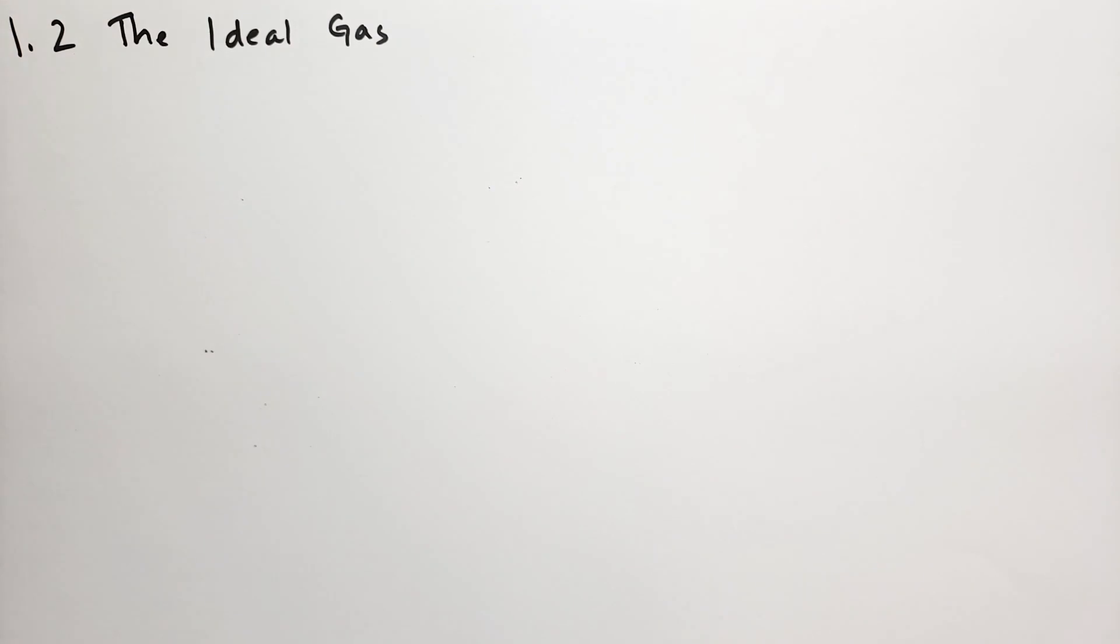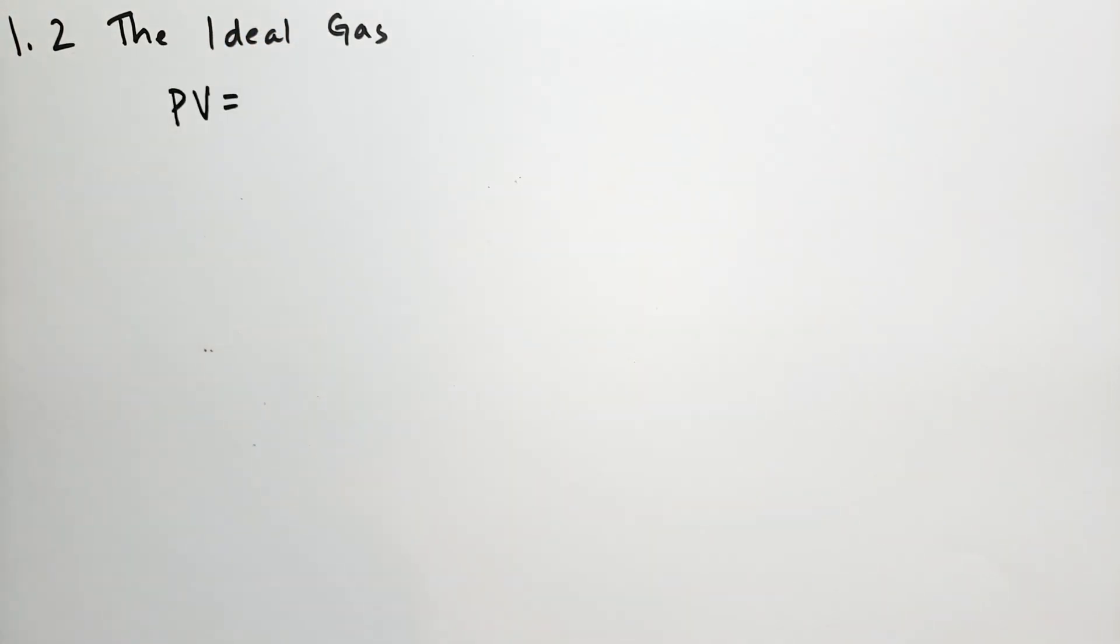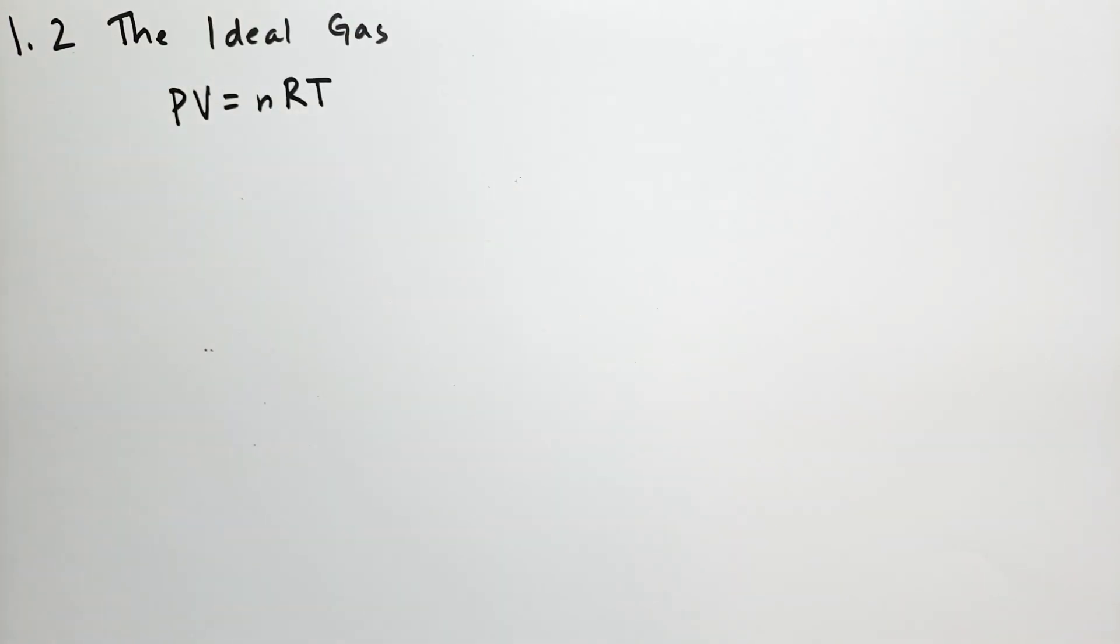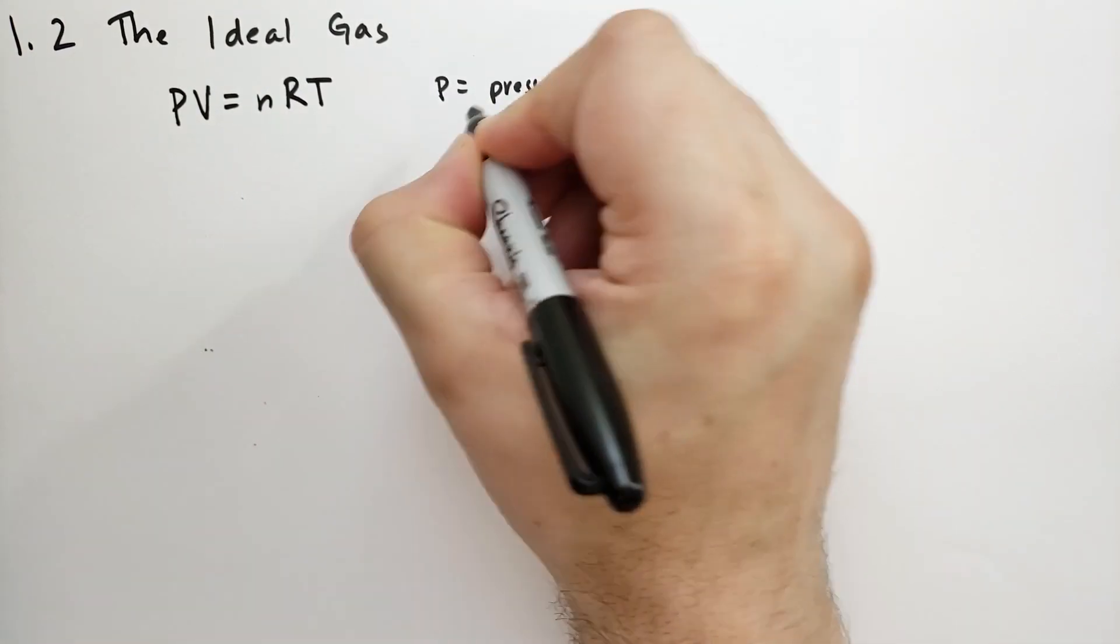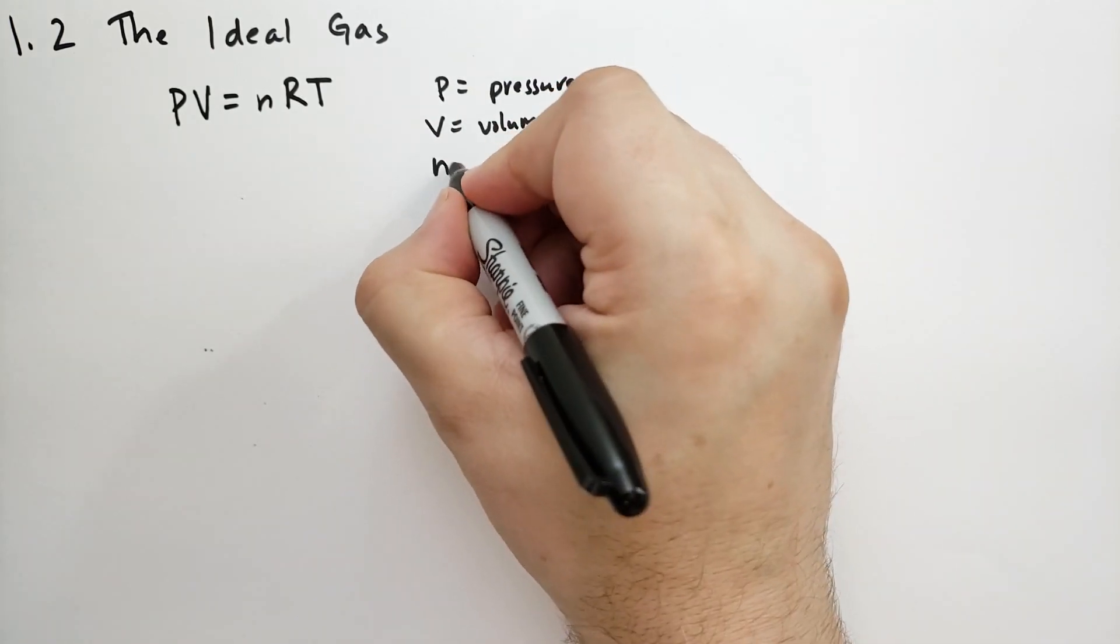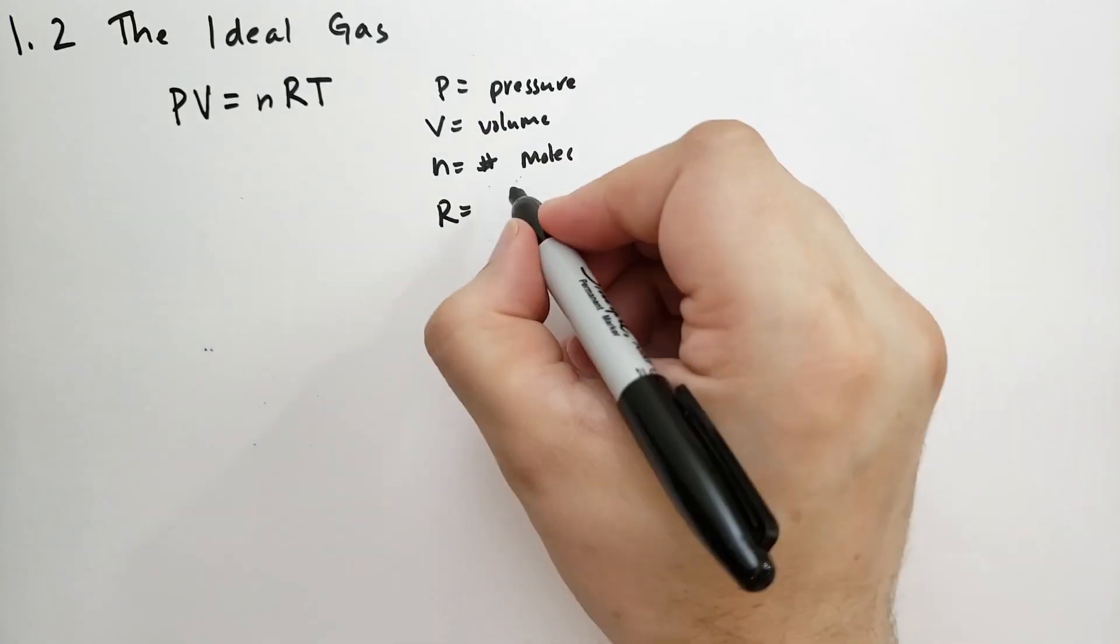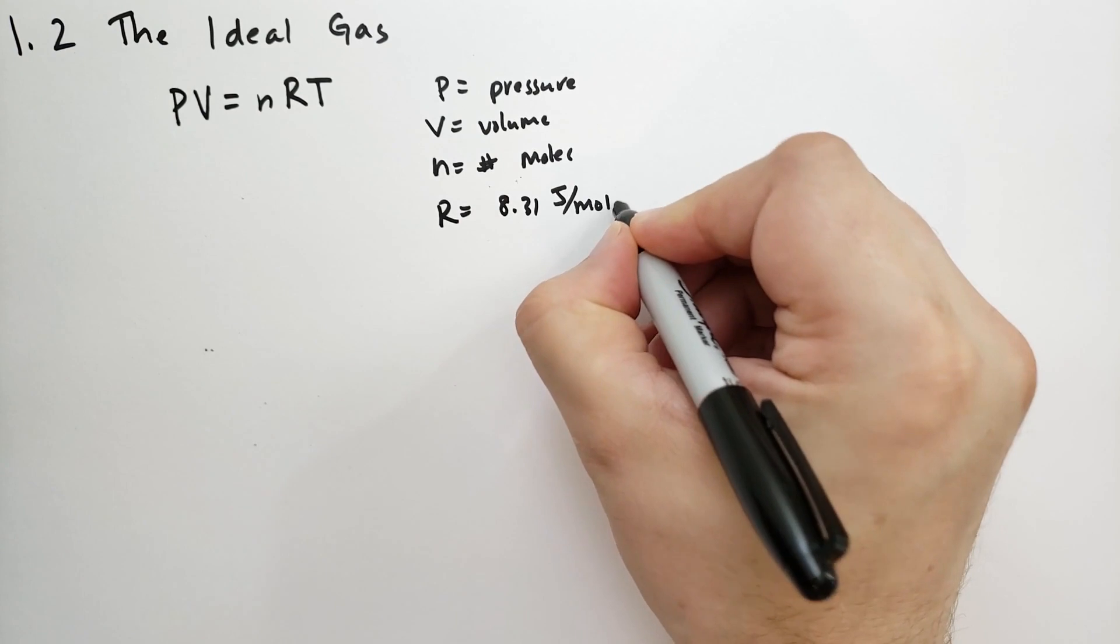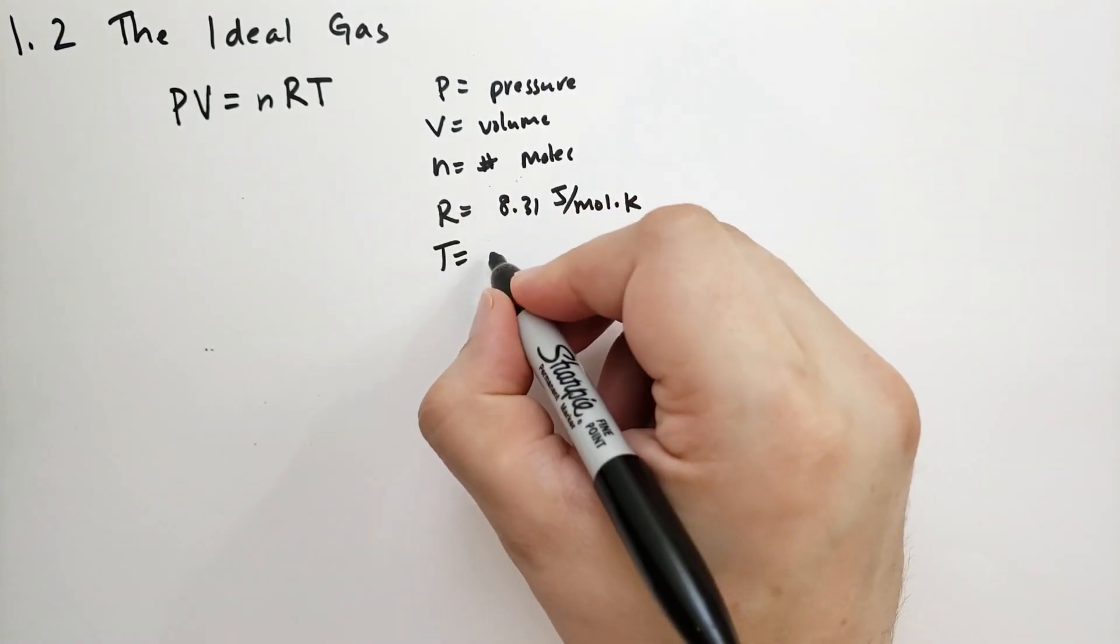The first part talks about the ideal gas law, which is simply P times V equals n, lowercase n, capital R, T. If we look at this, P is the pressure, V is the volume, n is the number of moles, and R equals 8.31 joules per mole degree Kelvin. And then we have T, which is the temperature in Kelvin.